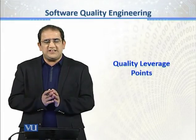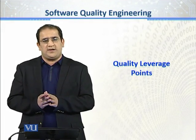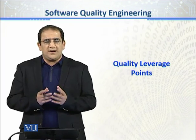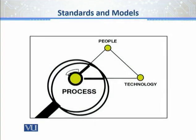Let's have a discussion on a very interesting topic: what is a quality leverage point? It seems a bit different but it is very simple. Just look at this diagram. In the context of software development, we know that there are two things involved. Number one: the people — the developers, project managers, business analysts, software architects, QA team, the client, and the supplier. Number two: the technology.